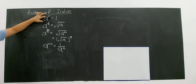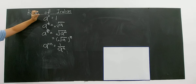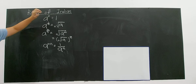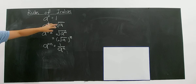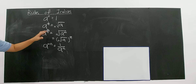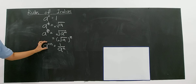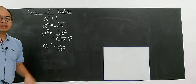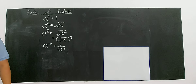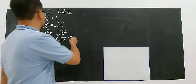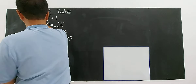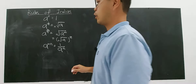To summarize so far: anything to the power of 0 — except 0 — equals 1. A to the power of 1 over N equals the Nth root of A. A to the power of M over N uses the denominator as the root and the numerator as the power. And A to the negative N equals 1 over A to the power of N. You can copy these formulas down.